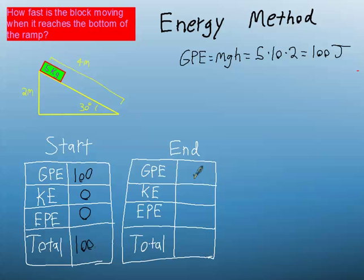Now at the end, when the block's at the bottom of the ramp, since it's at the bottom, it has no gravitational energy, and there was never a spring involved, which means that the kinetic energy at the bottom of the ramp had better equal 100, since the total energy must still remain 100. So all 100 of those joules transformed from gravitational energy at the top to kinetic energy when it moved to the bottom.